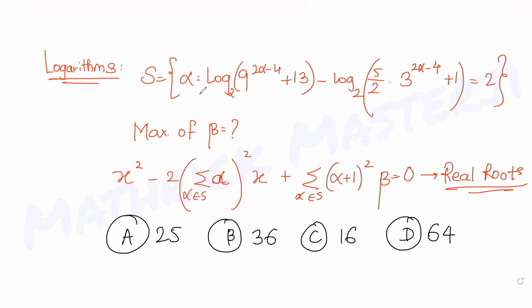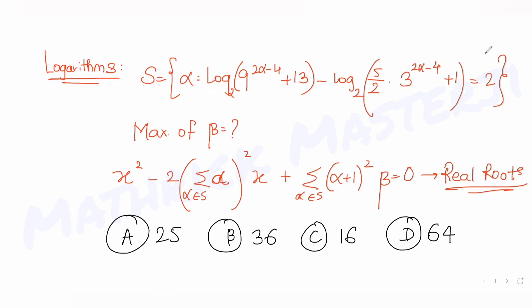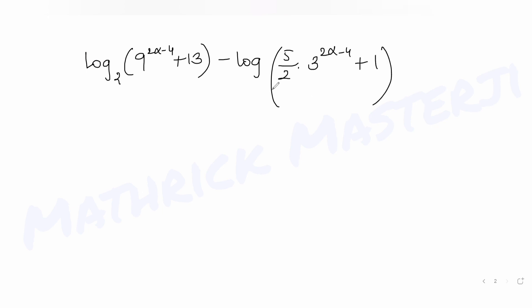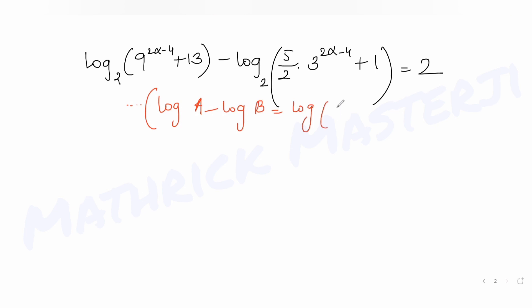Let's solve the first equation to find the values of alpha in set S. I write: log base 2 of (9^(2α−4) + 13) minus log base 2 of (5/2 · 3^(2α−4) + 1) = 2. Using the formula log A − log B = log(A/B), I can combine these into a single logarithm.